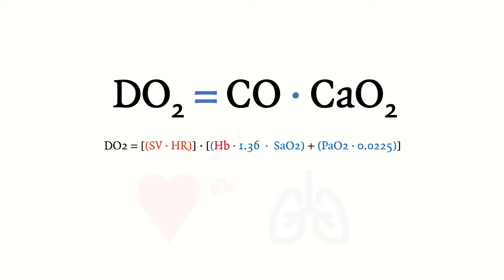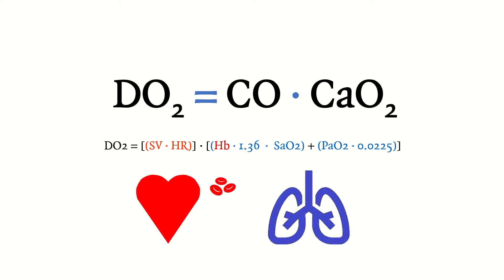To optimize oxygen delivery to our cells, we need to optimize the heart, optimize hemoglobin levels, and optimize the lungs and oxygenation. That's what we do in the intensive care unit all the time — we support the heart, we support the lungs, and sometimes we transfuse patients. That is the core principle of applied physiology in intensive care.